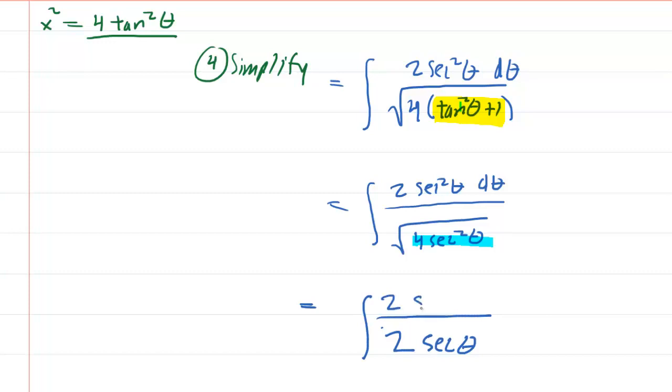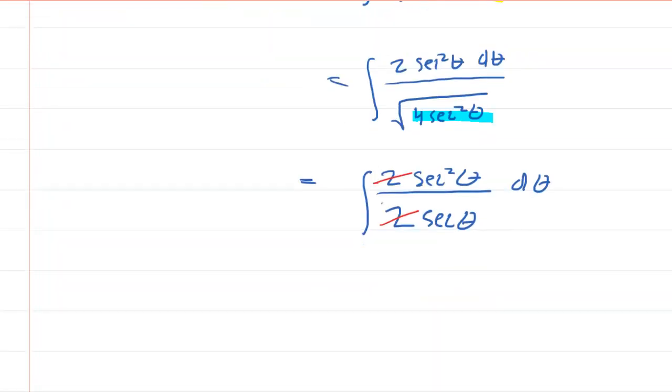Up top, you still have your 2 secant squared of theta d theta. Well, this is looking very nice because these 2s would cancel and then a factor of secant cancels. You have one factor in the denominator and a pair of factors in the numerator. Go ahead and cancel one of those out on each side. And you are left with simply the integral of secant of theta d theta.